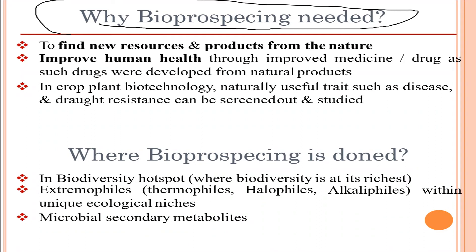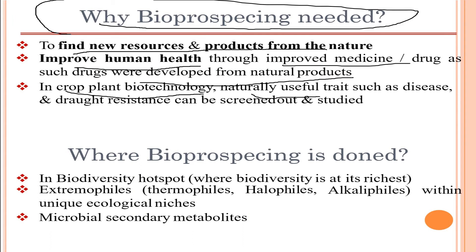Why is bioprospecting needed? It is basically to find new resources and products from nature. It improves human health because it does not involve harmful pesticides or other harmful agents. It leads to improved medicines and drugs developed from natural products, and in crop plant biotechnology, naturally useful traits such as disease and drought resistance can be screened and studied.